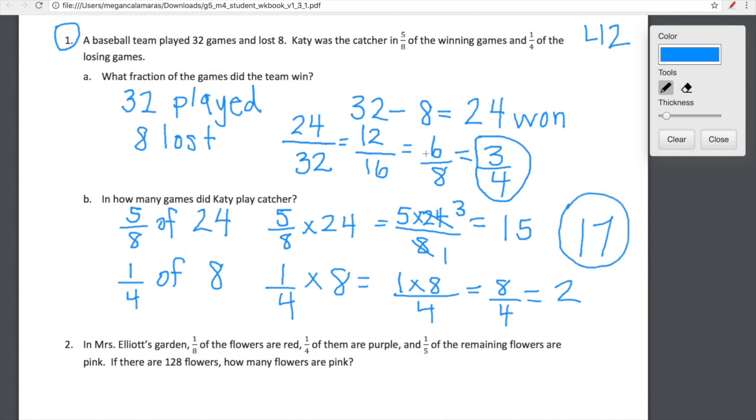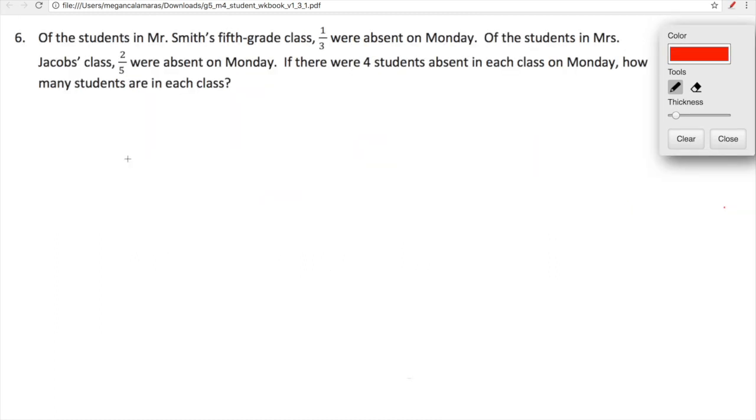So these calculations are not difficult. You guys know how to subtract whole numbers. It's just really understanding what is being asked of us. So just keep that in mind. We are going to look at one more and then we are going to move on with our lives. Let's read it first. Of the students in Mr. Smith's 5th grade class, 1 third were absent on Monday. Of the students in Mrs. Jacobs class, 2 fifths were absent on Monday. If there were 4 students absent in each class on Monday, how many students are in each class?